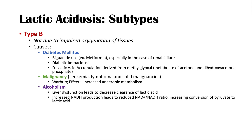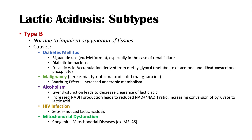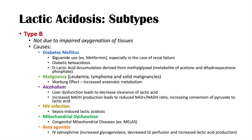HIV infection can lead to a Type B lactic acidosis through sepsis-induced mechanisms. Mitochondrial dysfunction, such as in mitochondrial diseases like MELAS, is another cause. Beta agonists are also a notable cause — IV epinephrine leads to Type B lactic acidosis by increasing glycogenolysis and thus glucose and pyruvate production, while also decreasing GI perfusion. Both increased pyruvate production and decreased GI perfusion contribute to the lactic acid accumulation seen with beta agonist use.